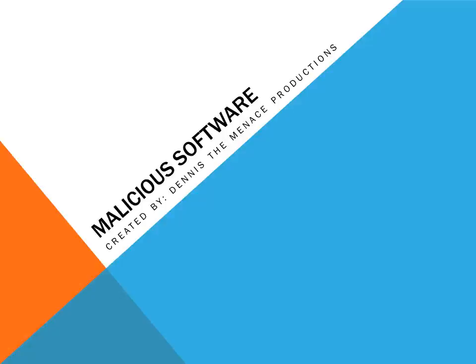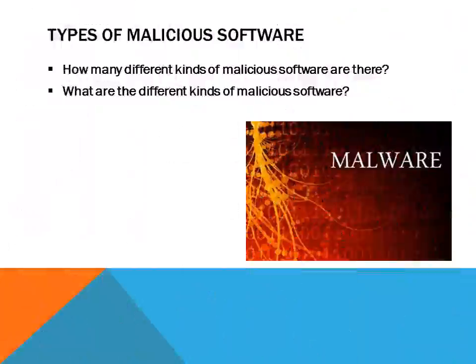We look at malicious software. When discussing malicious software, first we need to ask ourselves how many different kinds of malicious software are there. There are plenty of different types, however we are going to focus on the five main types: viruses, worms, Trojan horses, spyware, and rootkits. Those are the five main ones we're going to be focusing on for the IB exam, but there are also other types out there as well.